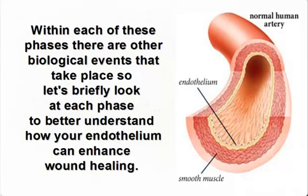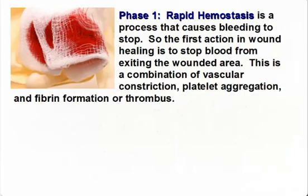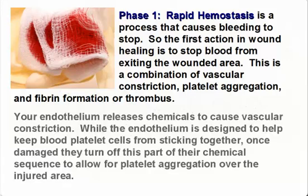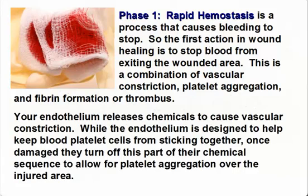Phase one, rapid hemostasis, is a process that causes bleeding to stop. The first action in wound healing is to stop blood from exiting the wounded area. This is a combination of vascular constriction, platelet aggregation, and fibrin formation or thrombus. Your endothelium releases chemicals to cause vascular constriction. While the endothelium is designed to help keep blood platelet cells from sticking together, once damaged, they turn off this part of their chemical sequence to allow for platelet aggregation over the injured area.